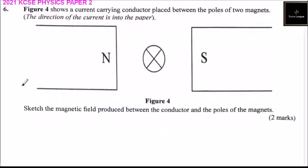Question number six. Figure four shows a current carrying conductor placed between the poles of two magnets. The direction of the current is into the paper.